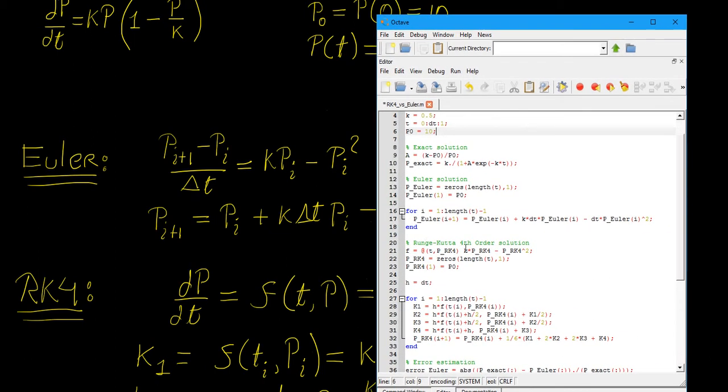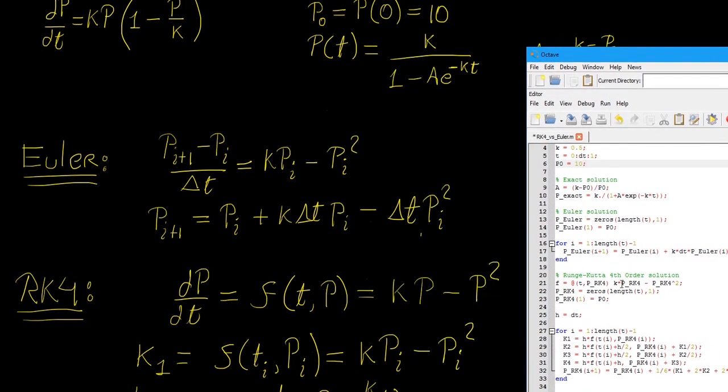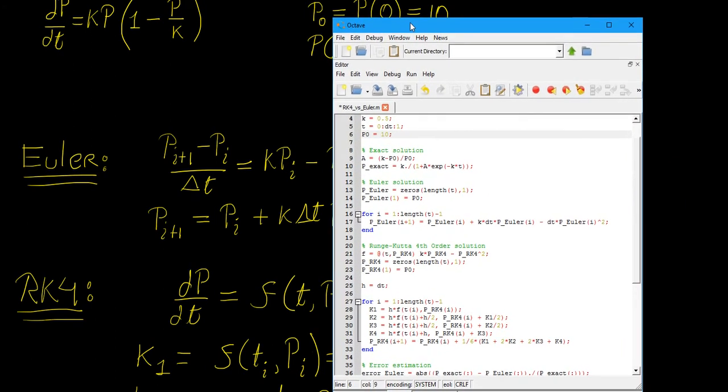And now we're going to have the Runge-Kutta fourth order here. The first thing we do is we declare this function f that we have here. I have called it prk4 just to stand for solution for rk4 method. Then we create an empty vector for that, assign the values of the initial population to it, and now make sure that your step size is being used here. I just copied this code from the one that I used in the previous video, so instead of just changing everything to dt, I just said let h equal to dt.